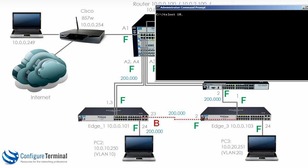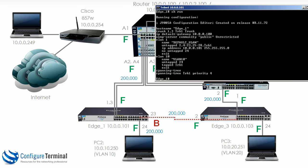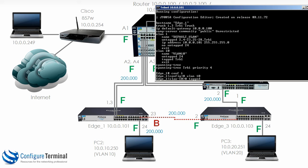Telnetting to edge 1 and typing show run, you can see that VLAN 1 is untagged on ports 2, 4 to 23, 25 to 28 and TRK 1. VLAN 1 is untagged on this link to the router and untagged on port 23, which is correct. But notice VLAN 10 is untagged on port 24, which is correct, it's tagged on TRK 1, but it's not tagged on port 23 — so we have to enable that. Tag 23.